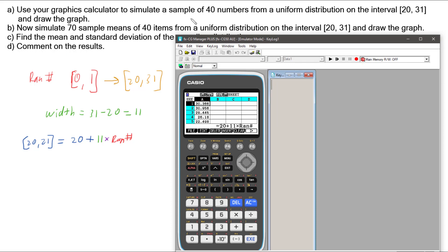So now we've got our single sample of 40 numbers. Let's have a look at simulating 70 samples and getting their means, and having a look at what that graph looks like.